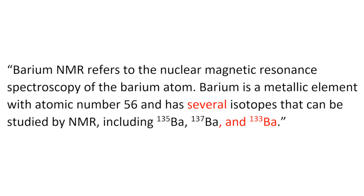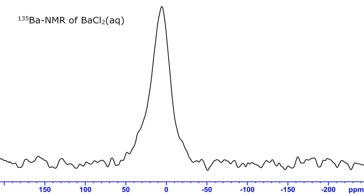When prompted with barium NMR, ChatGPT starts its answer with: Barium NMR refers to the nuclear magnetic resonance spectroscopy of the barium atom. Barium is a metallic element with atomic number 56 and has several isotopes that can be studied by NMR, including 135Ba, 137Ba and 133Ba. However, 133Ba is very radioactive, so cannot be used for NMR. Both remaining isotopes are very quadrupolar and therefore not suitable for studying anything other than aqueous barium atoms.